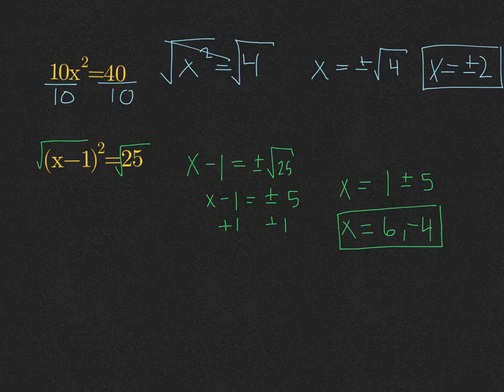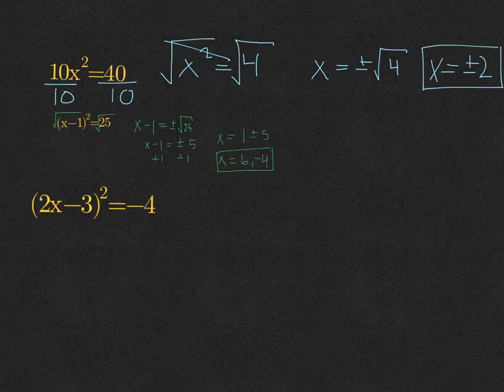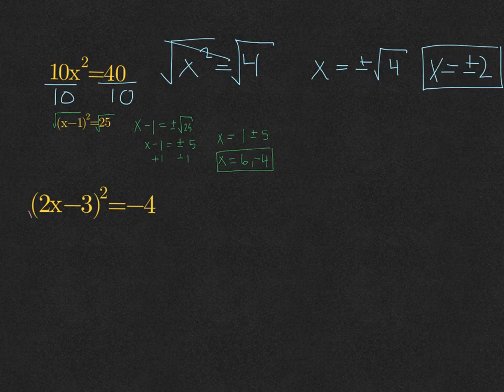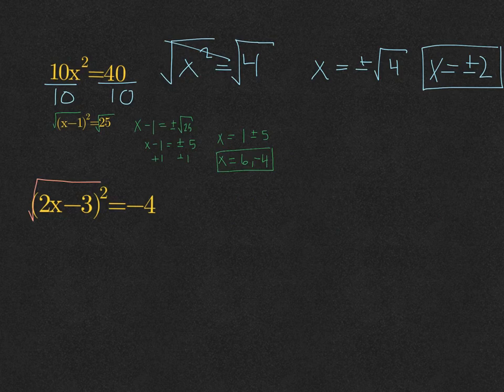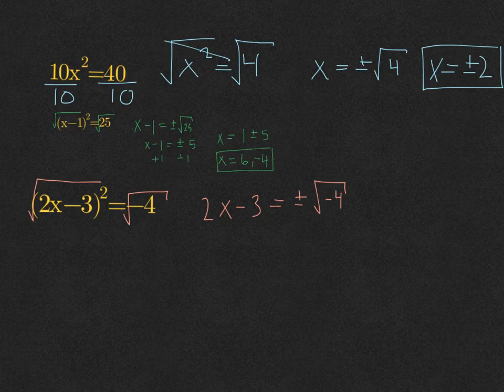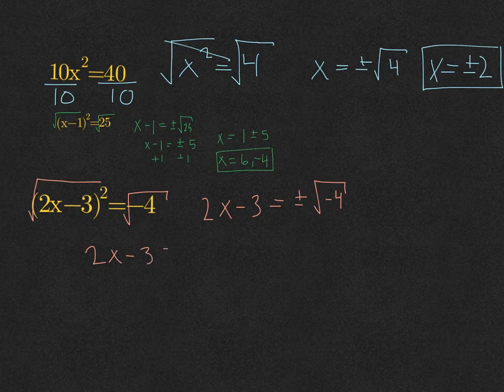Let's take a look at one last problem. This problem involves a negative under the square root. We have (2x minus 3) squared equals negative 4. Take the square root of both sides. That means 2x minus 3 equals plus or minus the square root of negative 4. The square root of negative 4 is plus or minus 2i.